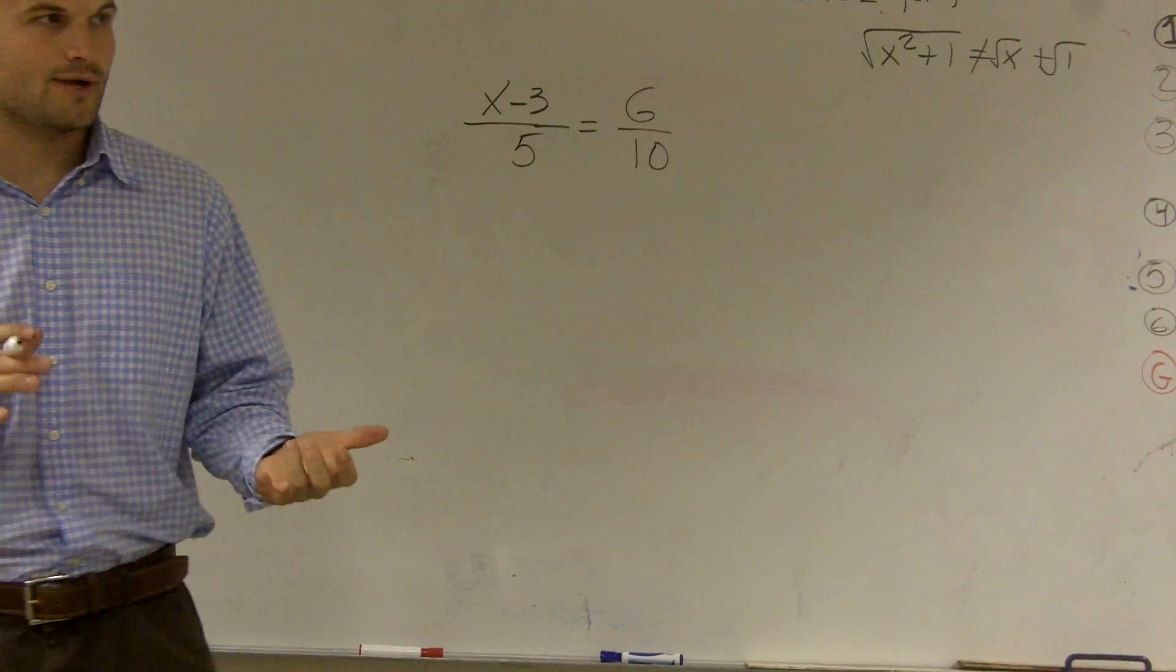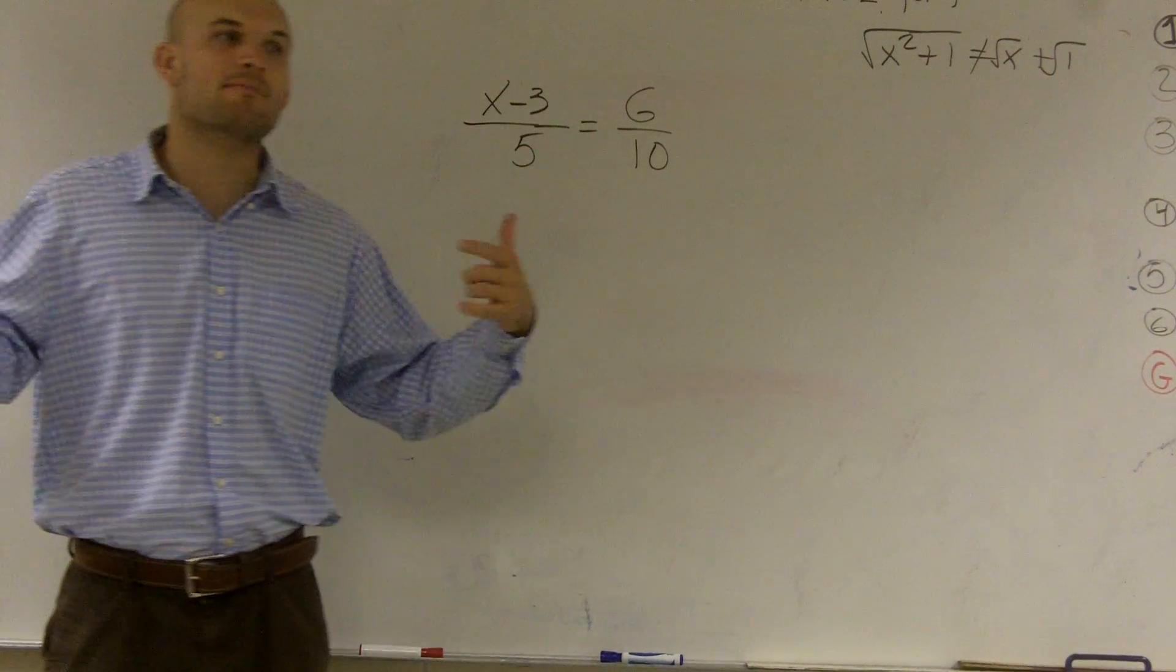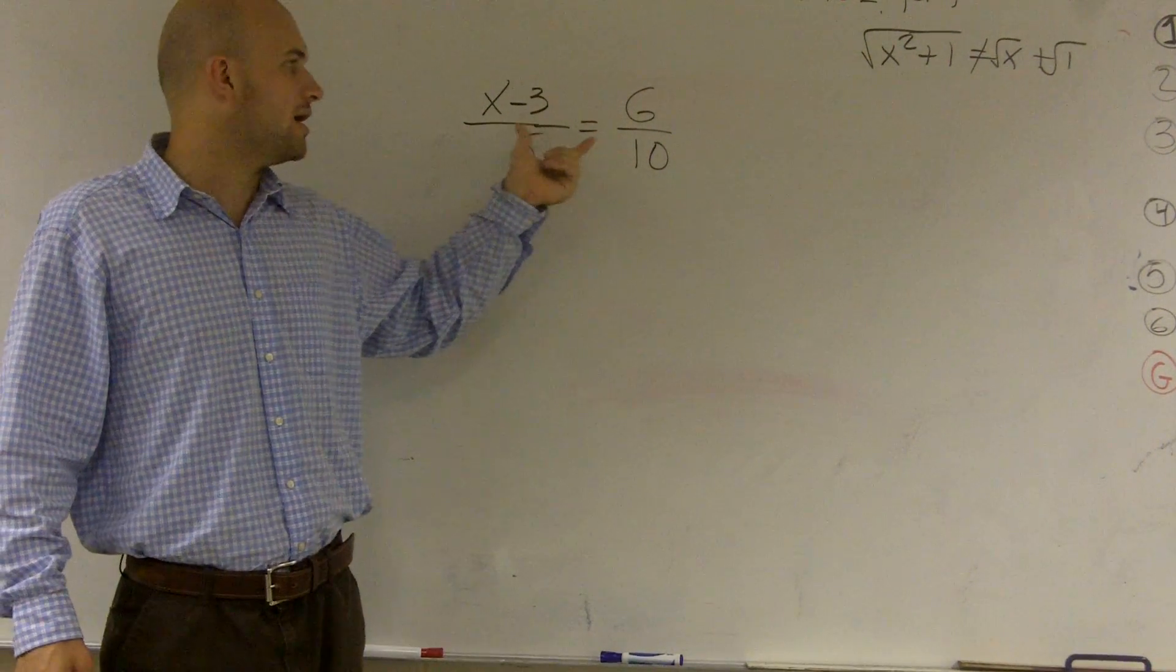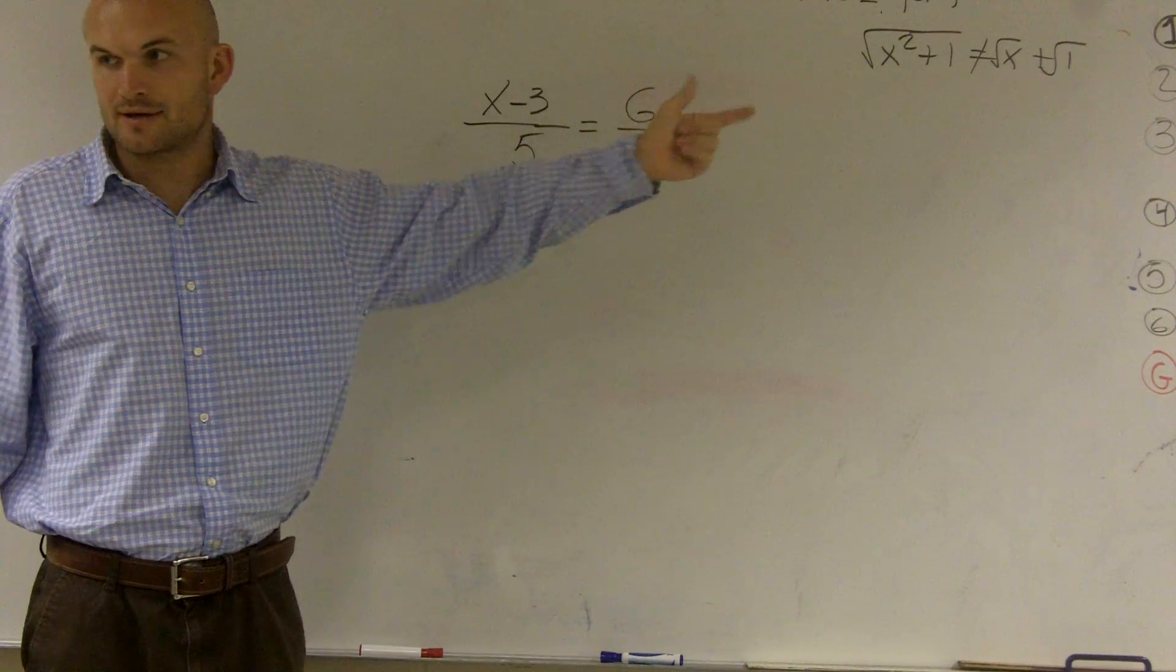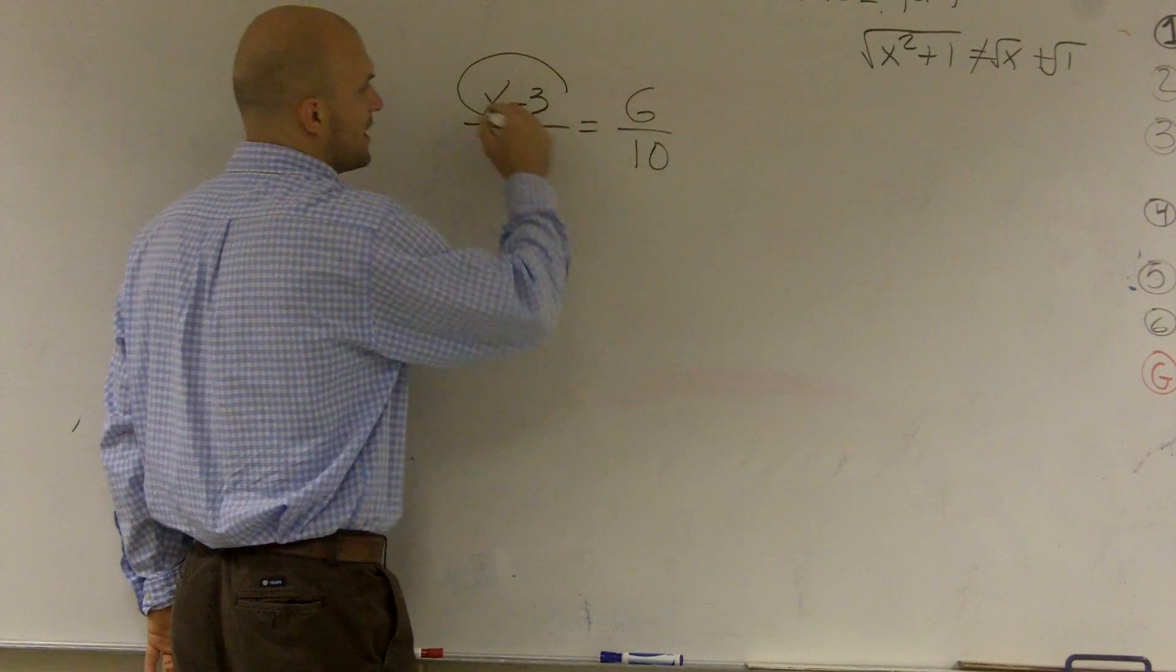If you guys remember, we worked on undoing division by multiplying, and when we multiplied on both sides, what we figured out was that I'm multiplying each fraction by the other denominator. So an easier process we figured out was what we called cross-multiplying.